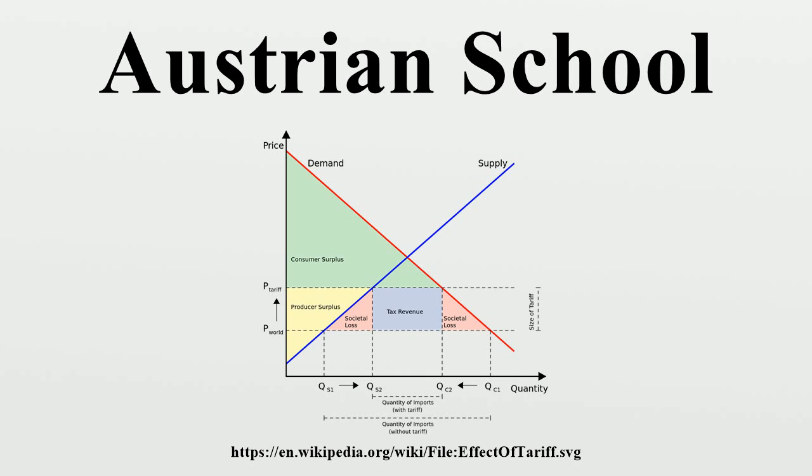Austrian macroeconomics can be expressed in terms of microeconomic foundations. Austrian economist Roger Garrison claims that Austrian macroeconomic theory can be correctly expressed in terms of diagrammatic models.